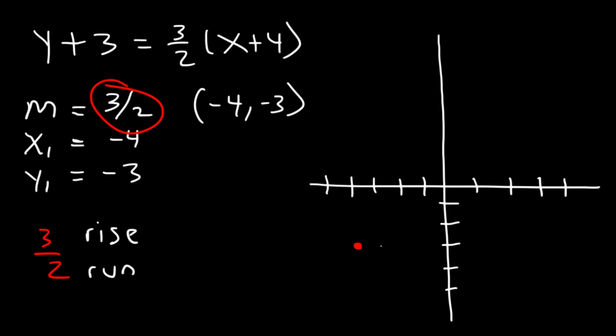So we're going to travel two units to the right, and we're going to go up three units. So the next point that we're going to get is negative 2 comma 0. x is negative 2, y is 0.